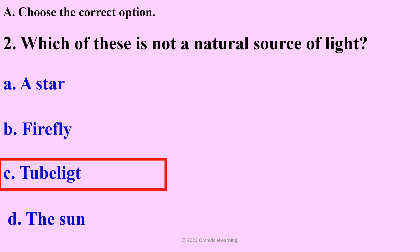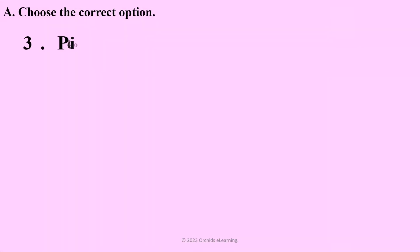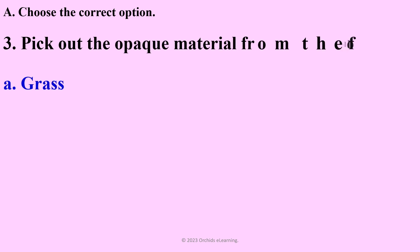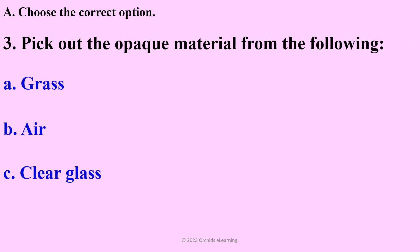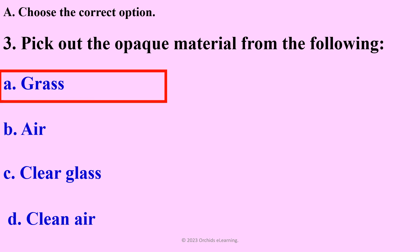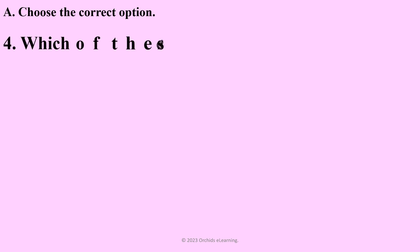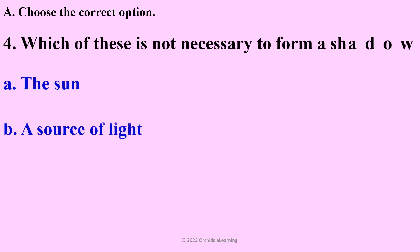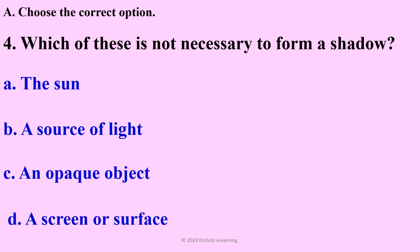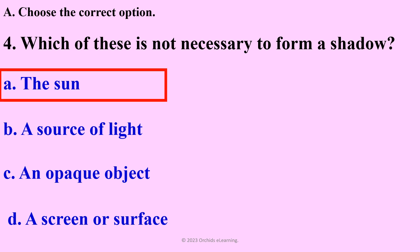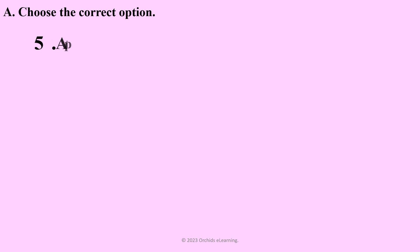Tube light. Pick out the opaque material from the following — answer: A. Grass. Which of these is not necessary to form a shadow? — answer: A.